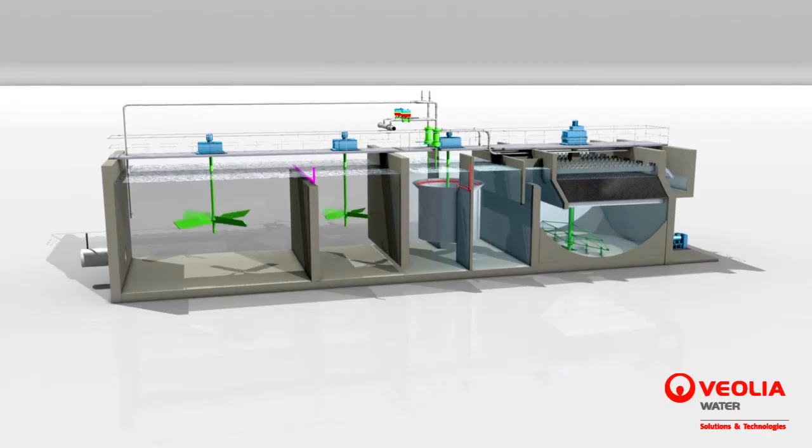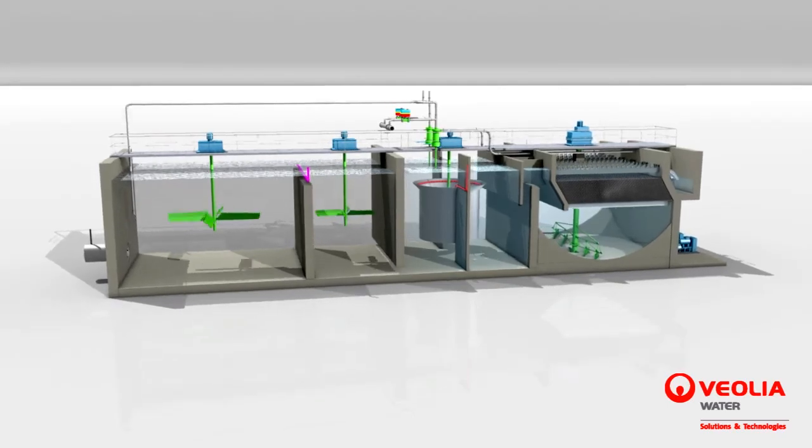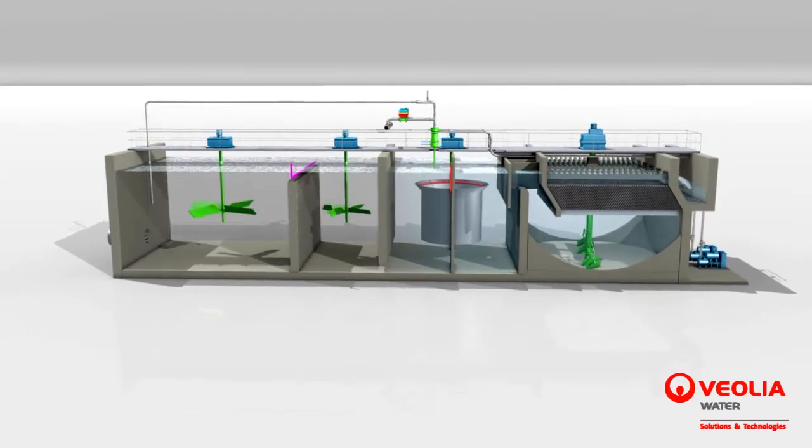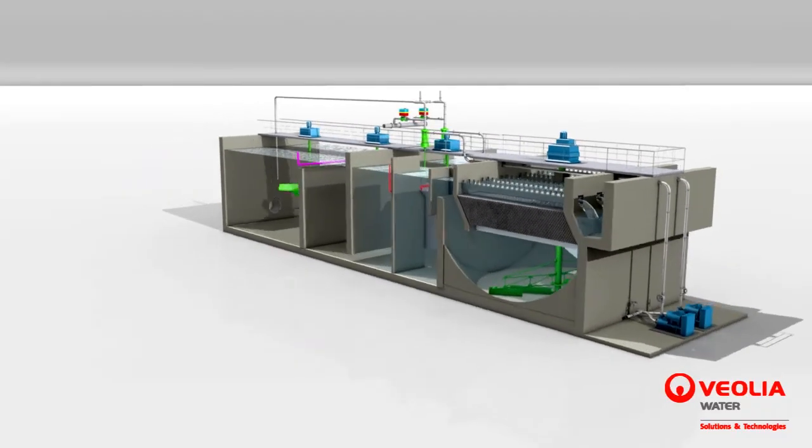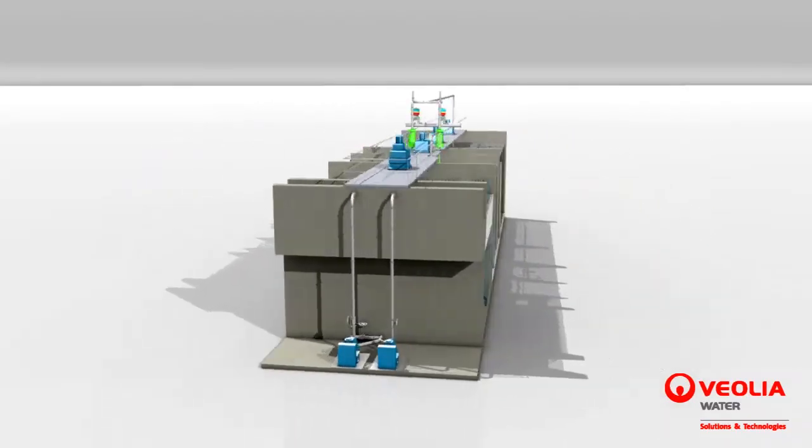ACTIFLOW CARB is equipped with a contact tank that utilizes powdered activated carbon for the absorption of non-flocculable organic matter, taste and odor compounds, pesticides, and emerging micropollutants.